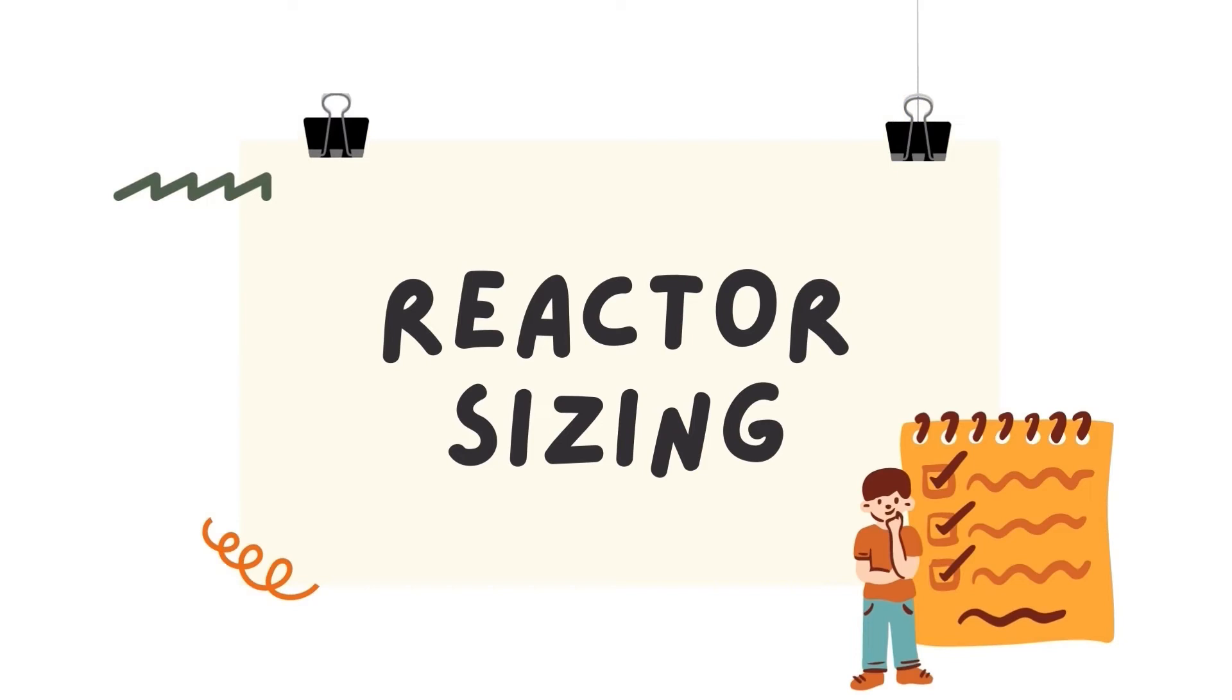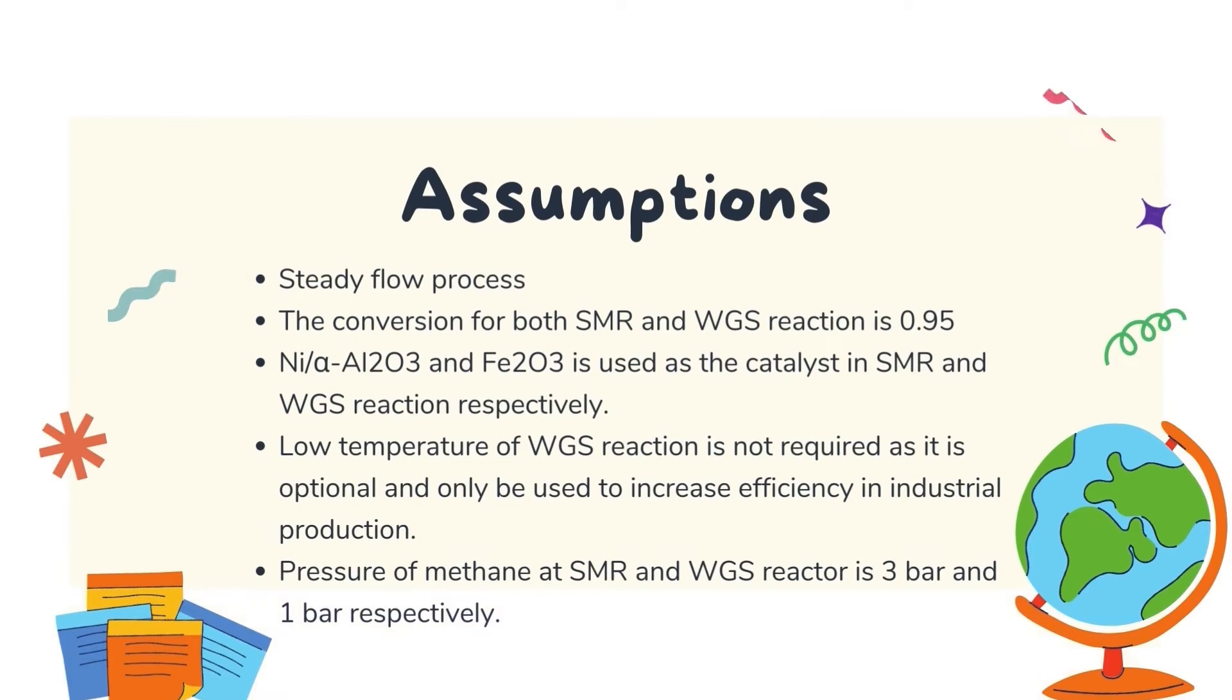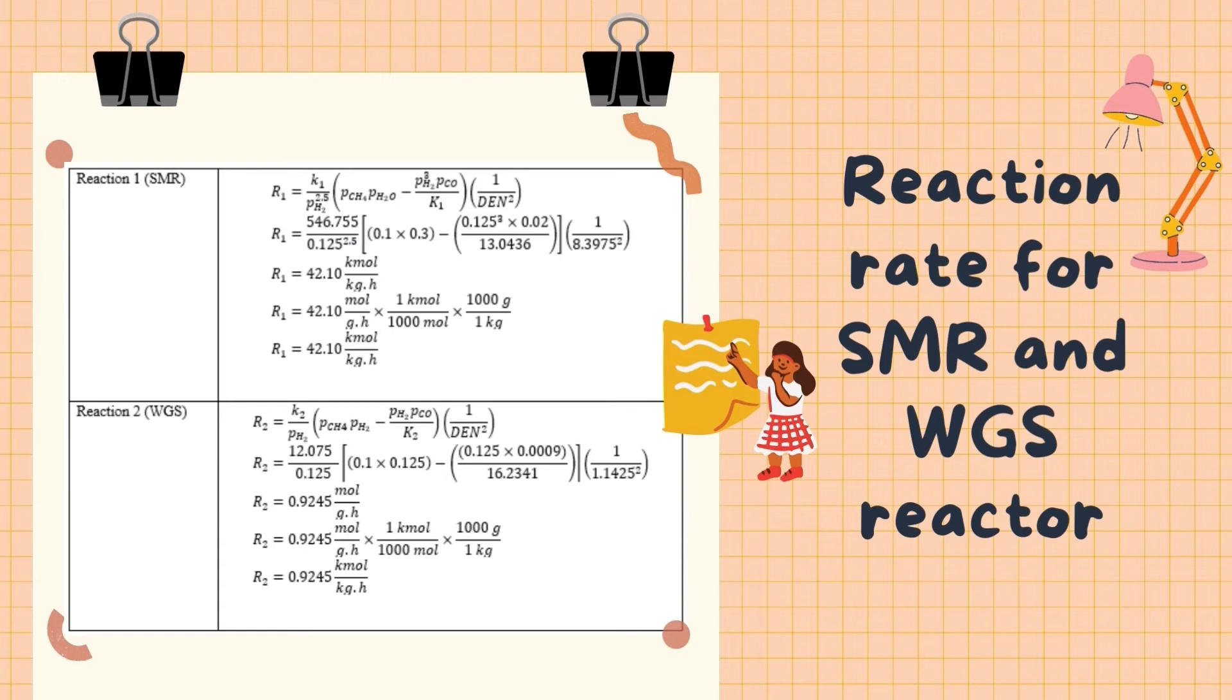Next, I will be explaining the reactor sizing. Here are the assumptions made to ease the calculation and simplify the equation. This is the kinetic data that is obtained from reliable sources. By using the information from the kinetic data, the reaction rate for both SMR and WGS reactor are calculated. It can be observed that the rate of reaction in SMR reactor is higher than that of WGS reactor.